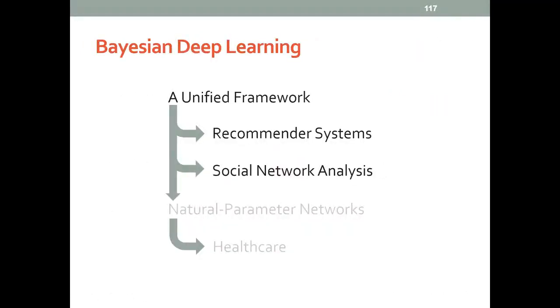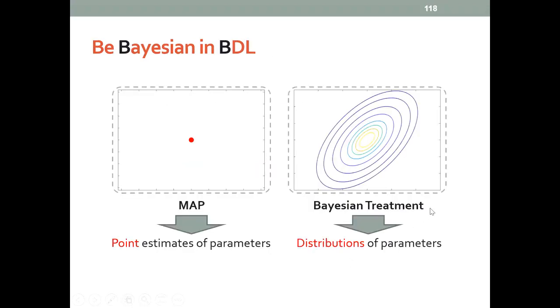Now that we have described some concrete models under the framework of Bayesian deep learning, note that for each of these models, we can have different parameter learning schemes. For example, we can use MAP to learn the point estimate of the parameters. We can also use Bayesian treatment to learn the distributions of the parameters.